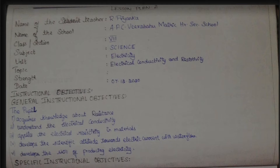Now we will see the instructional objectives. The general instructional objectives: the pupil acquires knowledge about resistance, understands electrical conductivity, applies electrical resistivity in materials, and develops a scientific attitude towards electric current.